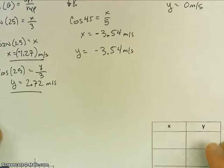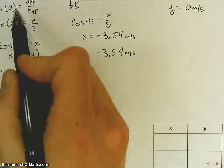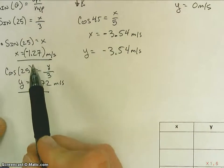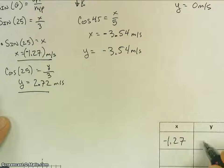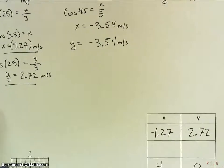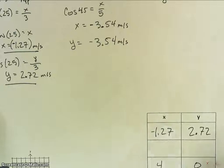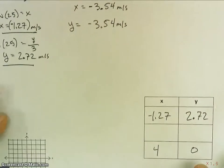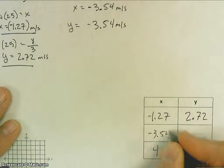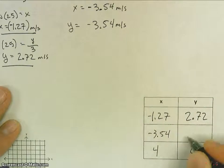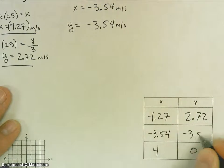My other two vectors, we'll go to vector 1 here. X was negative 1.27. Y was 2.72. And then my second vector, vector 2, we had x to be negative 3.54. And y is also negative 3.54.